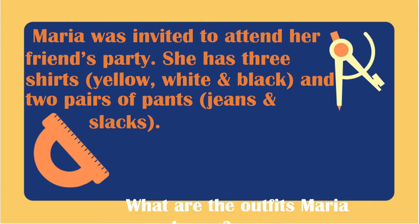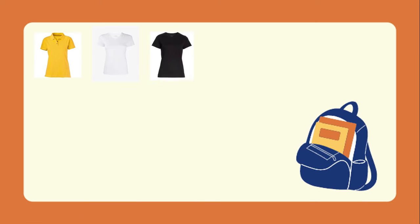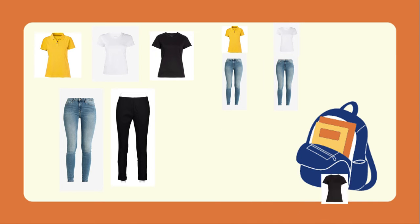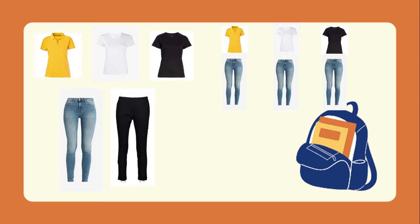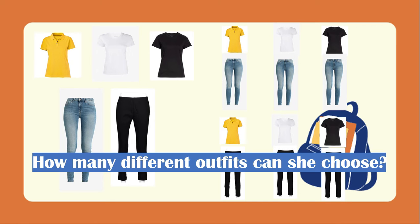For the shirts, we have the yellow, the white, and the black shirt. For the pants, we have the jeans and the slacks. Maria can wear the yellow shirt with jeans, white shirt with jeans, black shirt with jeans. She can also wear the yellow shirt with slacks, white shirt with slacks, and black shirt with slacks.